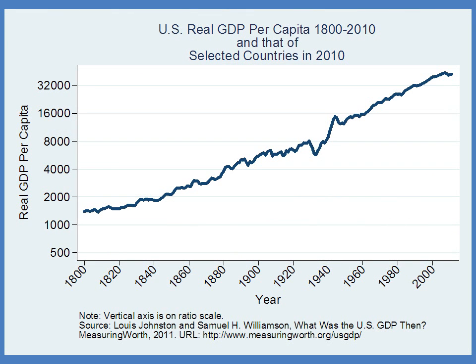Why is the United States so much richer than these other countries? Well, the most basic reason is that the United States has grown consistently for a very long period of time. This graph shows real GDP per capita over the last 210 years, from 1800 to 2010.